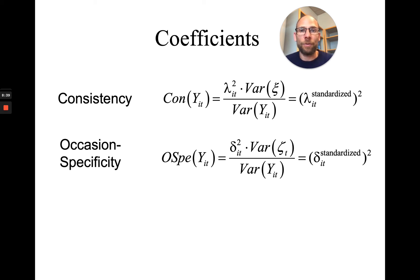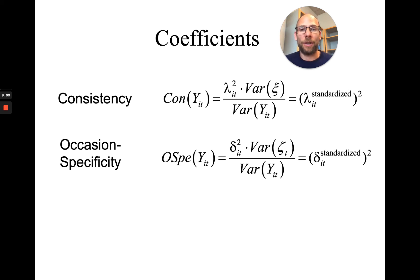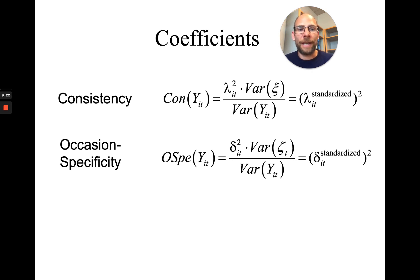This allows you to determine whether a measure is more of a trait measure or more of a state measure. In validation research, we're often interested in whether something really measures trait anxiety or is more a measure of state anxiety. If you want a measure of trait anxiety, you would want to maximize consistency and minimize occasion specificity. If you want a state measure of anxiety, you would want to maximize occasion specificity and minimize consistency. These coefficients can also help determine whether a construct is more trait-like or more state-like.